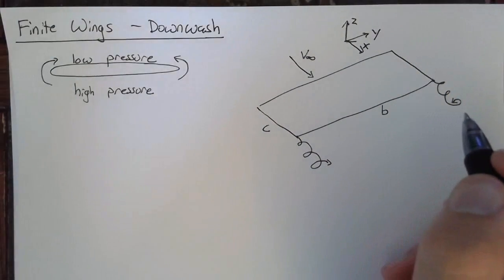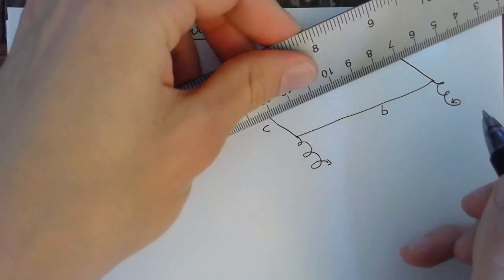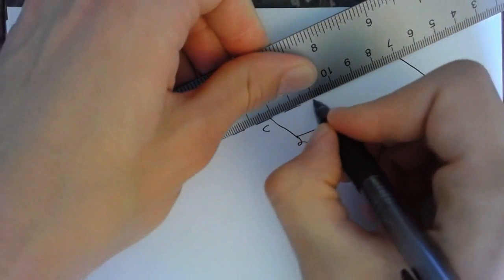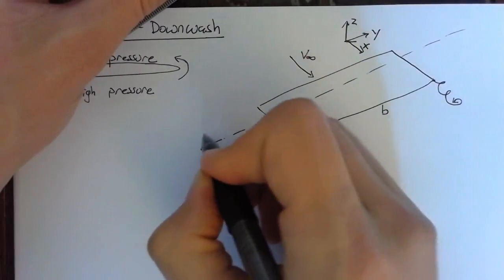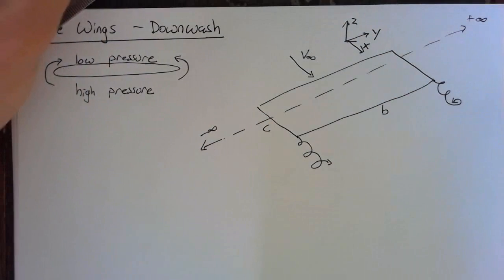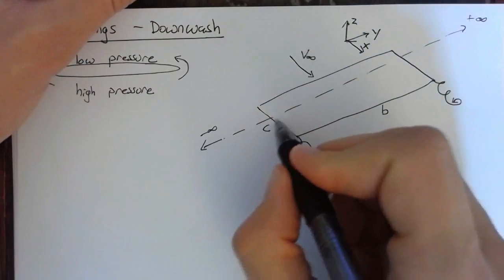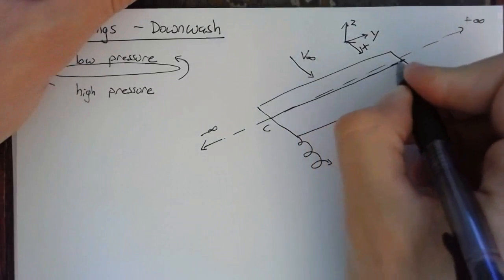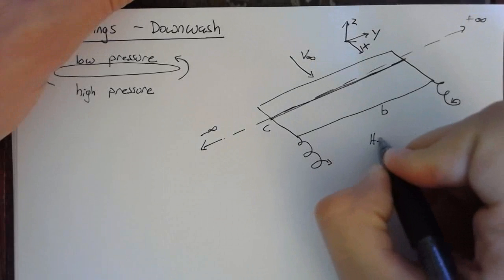Now before what we've done with an infinite wing is we've essentially just said that we have some vortex filament that travels from negative infinity to positive infinity in the y direction. So this goes from negative infinity to positive infinity. Now this doesn't really make physical sense. In real life, this should just go from one side of the wing to the other. But it can't just end, due to Helmholtz's theorem.